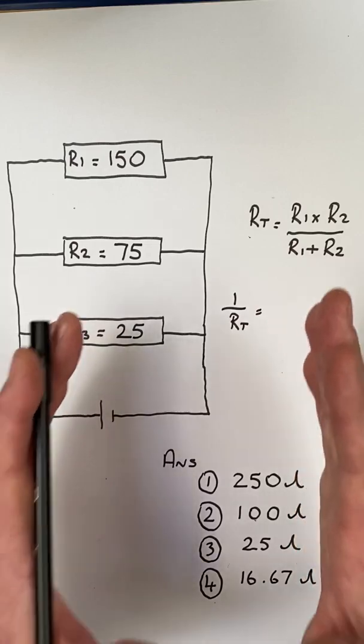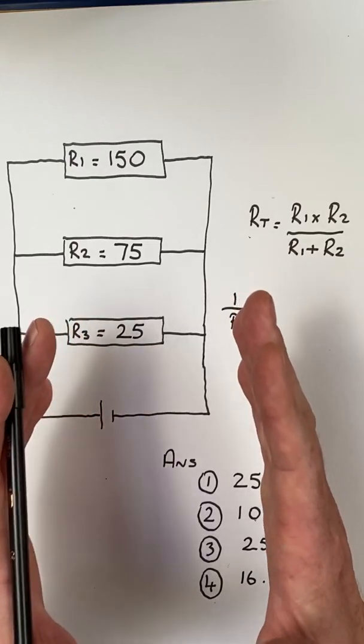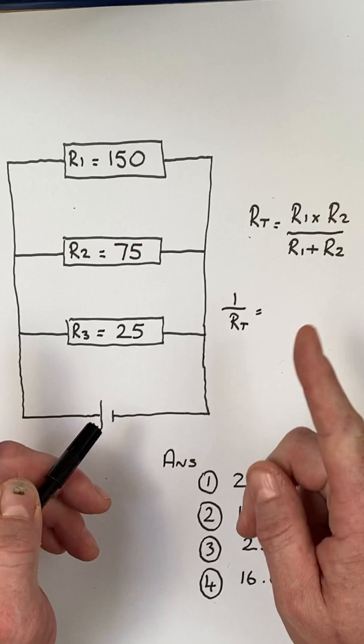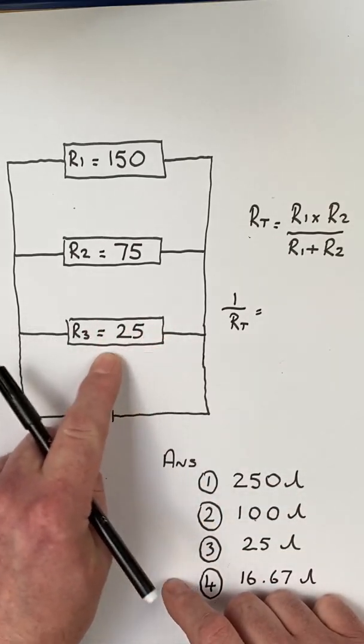Is there another way out of it? The total resistance in any parallel circuit is always less than the smallest resistor. Our smallest resistor is 25 ohms.